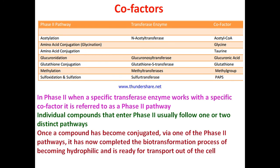Examples of phase two conjugation cofactors and enzymes: in acetylation, the enzyme is N-acetyltransferase and the cofactor is acetyl-CoA. In amino acid conjugation, cofactors are glycine or taurine. In glucuronidation, the cofactor is glucuronic acid (UDP-glucuronic acid) and the enzyme is glucuronosyltransferase. In glutathione conjugation, the enzyme is glutathione S-transferase and the cofactor is glutathione. In methylation, the enzyme is methyltransferase and the cofactor is a methyl group.